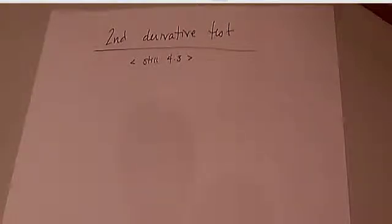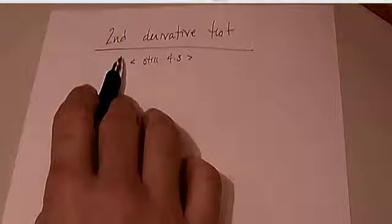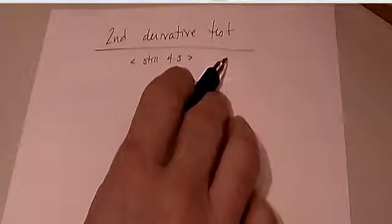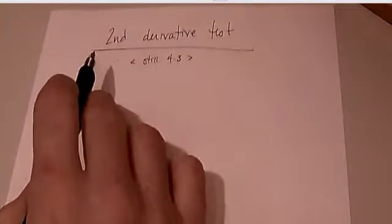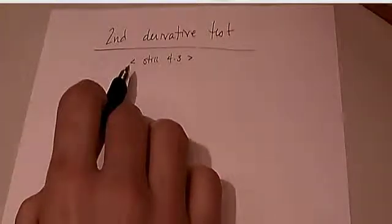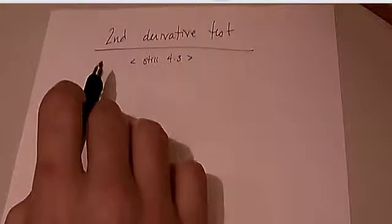The first derivative talks about increasing and decreasing slope, and it identifies maxima and minima. The second derivative test also identifies maximums and minimums. The tricky part is that the second derivative describes concavity, but the second derivative test uses the second derivative to confirm information about extrema that you got from the first derivative.